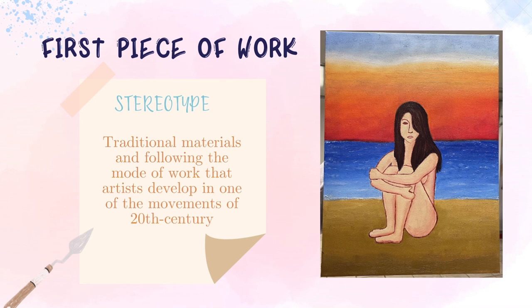When choosing the stereotype, the first thing I did was the preparation, researching this concept in various places to be clear about its meaning and thus be able to start thinking about what to do. I finally chose the idea of talking about nudism at the beach. With that idea, the first thing that came to my mind was to choose a woman, so I could talk about other types of stereotypes at the same time. I decided to place a naked woman hugging her knees sitting on the scene. This position suggests vulnerability and fragility.